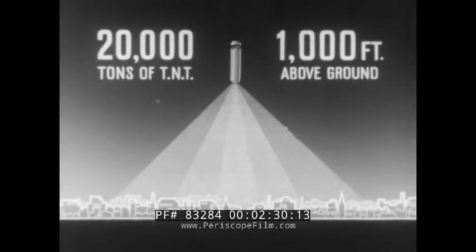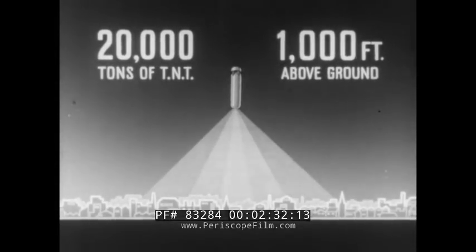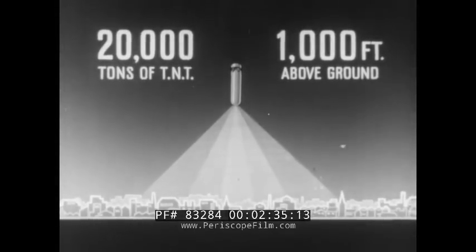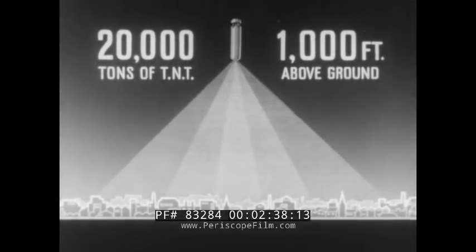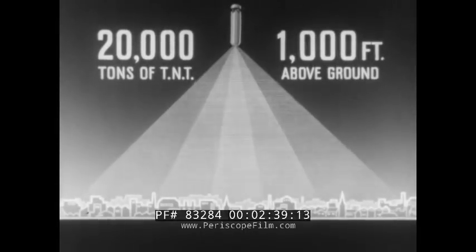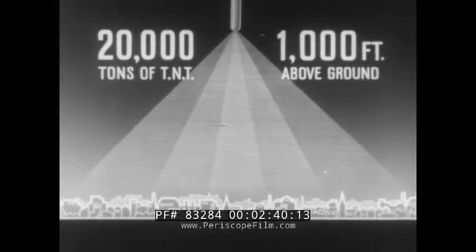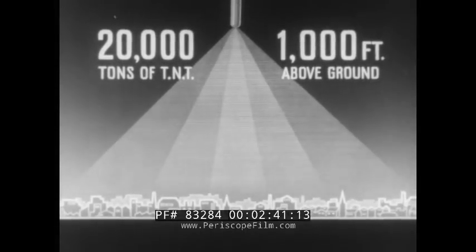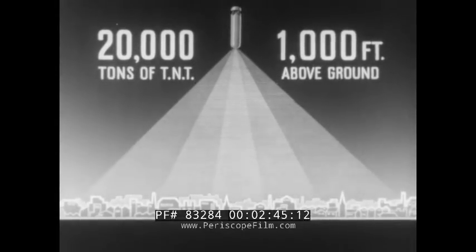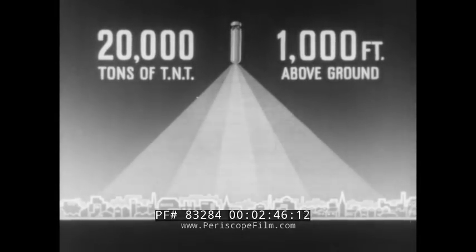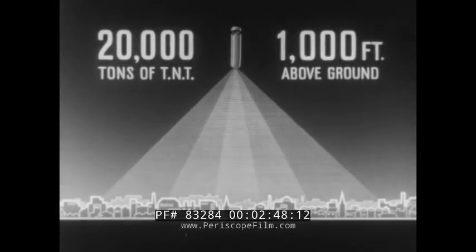This is about the height at which maximum destruction would be caused to a British city. To explode the bomb below this height would reduce the area of destruction, while to explode it at a greater height would reduce its power to destroy large steel-framed buildings. If the bomb were more powerful than the nominal, then the height of detonation would be greater.